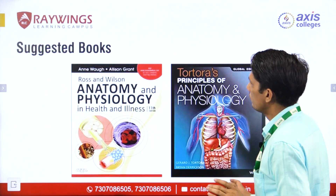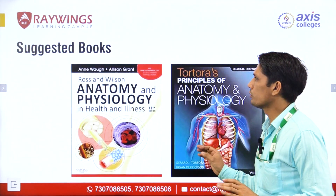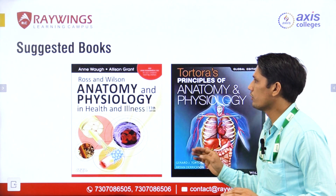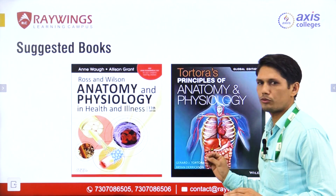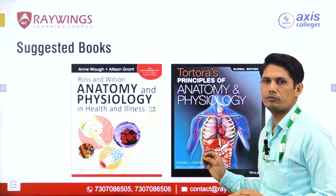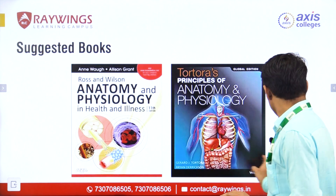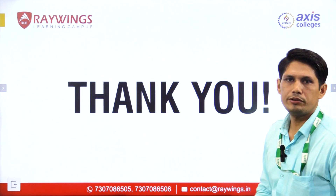The suggested books for human anatomy and physiology are Ross and Wilson, and Tortora, for first-year students. Thank you.